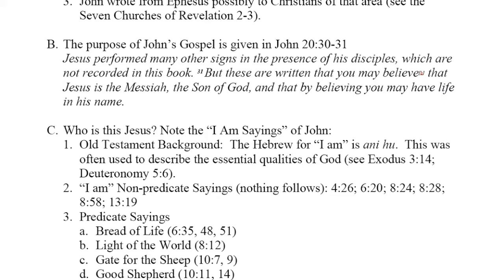The purpose of John's Gospel is given in John chapter 20, verses 30-31. Jesus performed many other signs in the presence of his disciples, which are not recorded in this book. John could have written a lot more, but he chose specifically what he included for a purpose, found in the next verse: 'But these are written that you may believe that Jesus is the Messiah, the Son of God, and that by believing you may have life in his name.' John wrote this Gospel so that readers will come to believe in Jesus Christ, leading to eternal life.